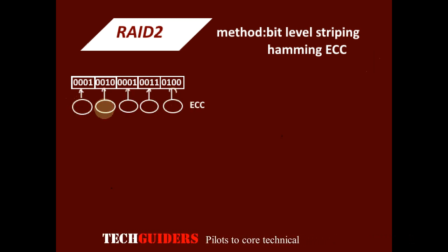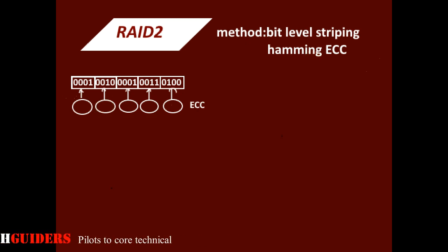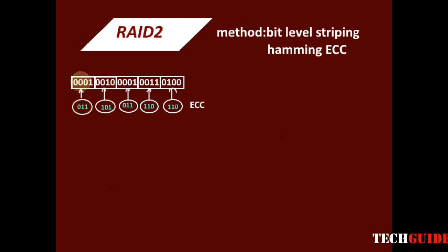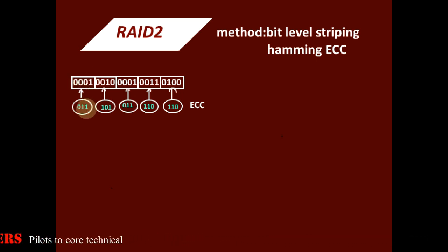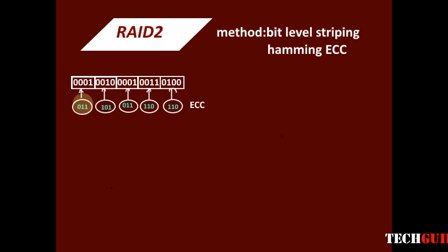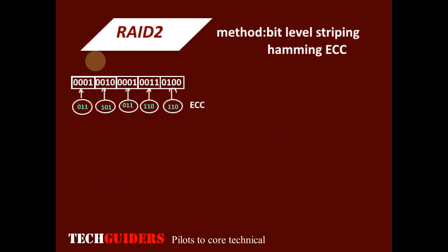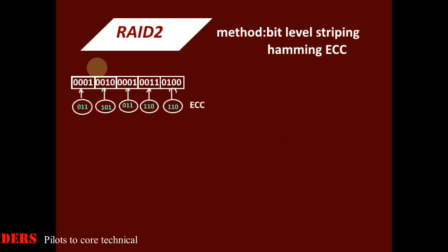This error correcting code consists of multiple parity bits, and the number of parity bits depends upon the number of data bits in the data word. For example, for 4 data bits we need 3 redundant bits. Another scheme is to use 4 redundant bits for 10 data bits. This error correcting code helps to identify and correct any corrupted bit, and also helps to recover any missing bit.